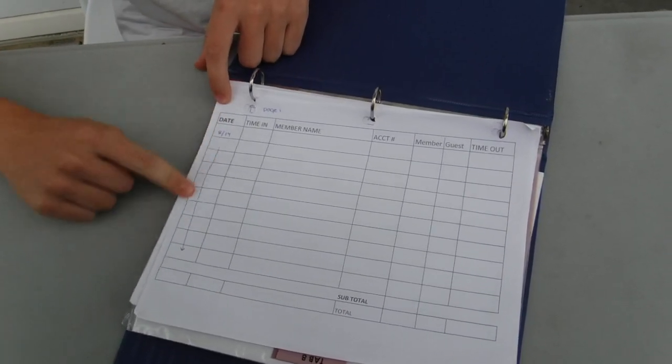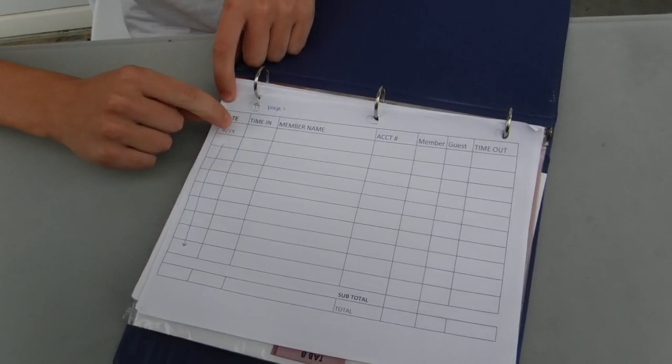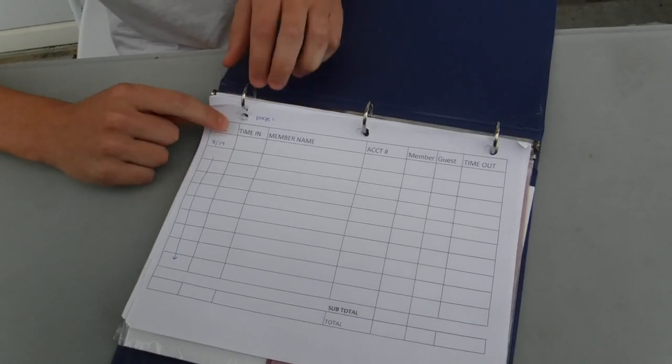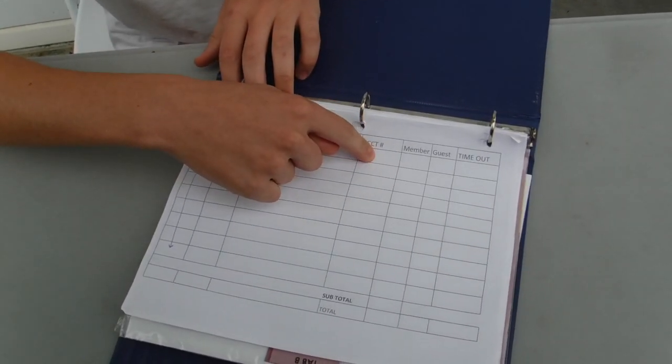So first things first, you know the date column, just fill that out with the date, and then whenever the member arrives write down their name and their account number.